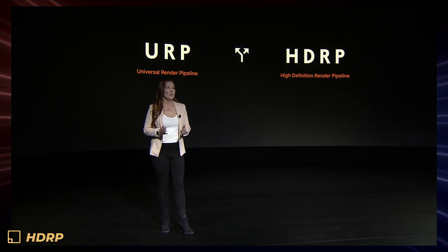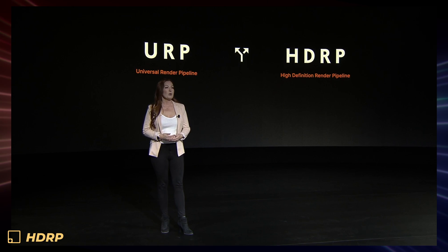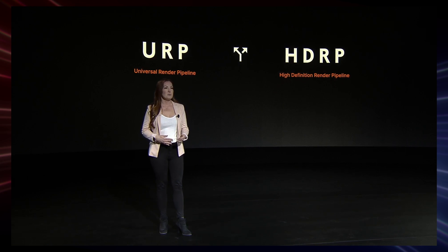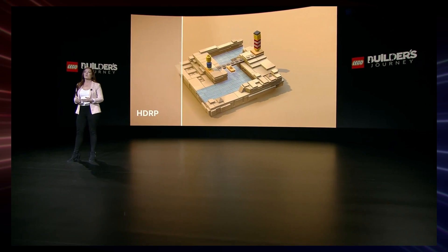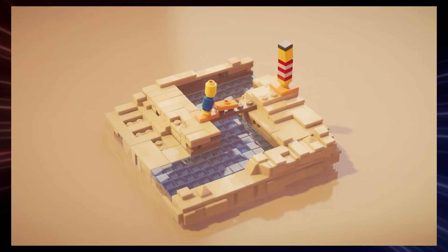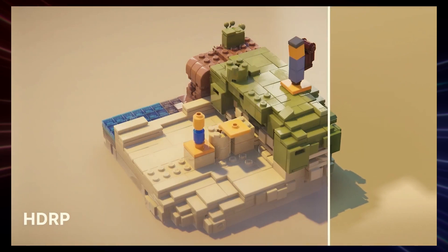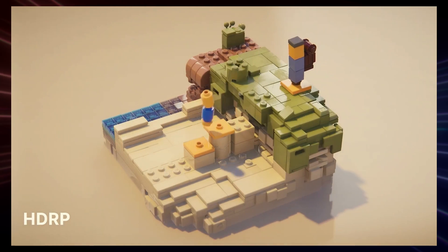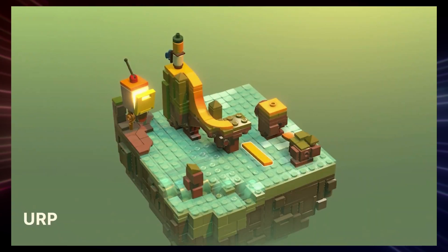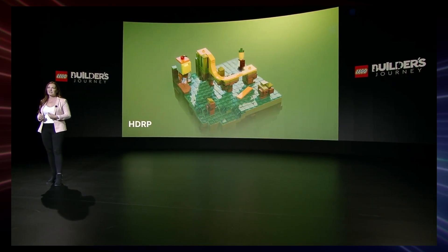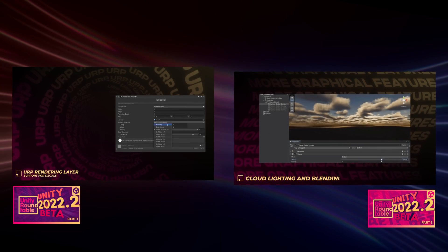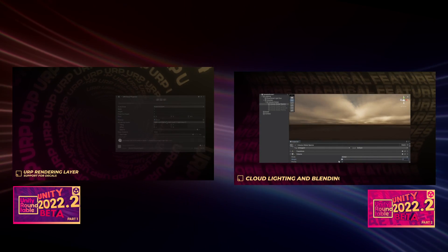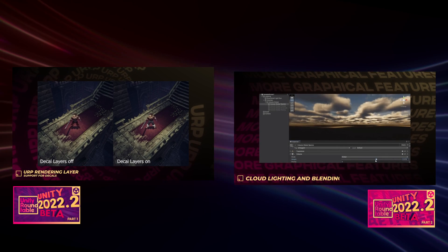Unity also announced that they are working on modifying the render workflow in order to allow using both HDRP and URP in a single project. They're also working towards bringing URP to parity with the built-in render pipeline. Forward Plus, which I talked about in a previous video, is a result of those efforts. While discussing HDRP, they mentioned a lot of the things that I've already shared in my latest 2022.2 coverage videos, which you can find in the info card and description below.